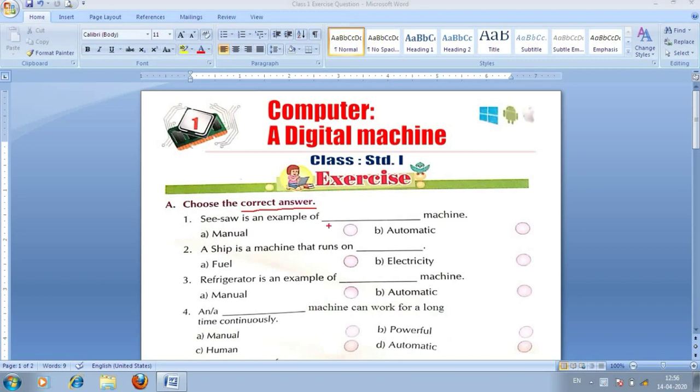First one is, seesaw is an example of dash machine. Option one, manual. Option two, automatic. It means, babu, kya hai, jhula kis prakar ka machine hai. Option one, manual machine hai. Option two, ya automatic machine hai. Toh, jhula ek prakar ka manual machine hai. Here, we have to tick. Toh, yahaan hum tick kar dhenge.